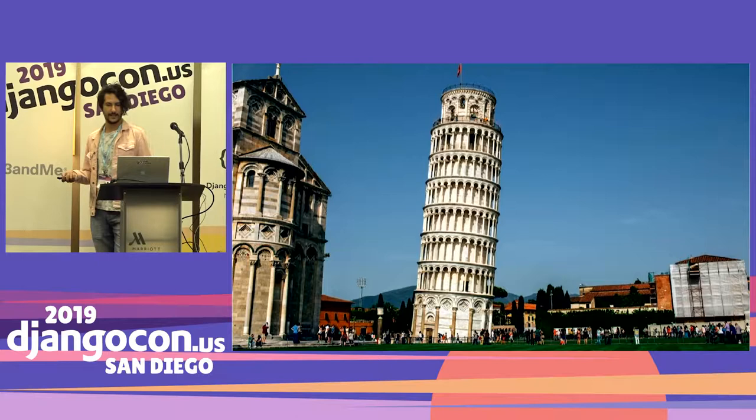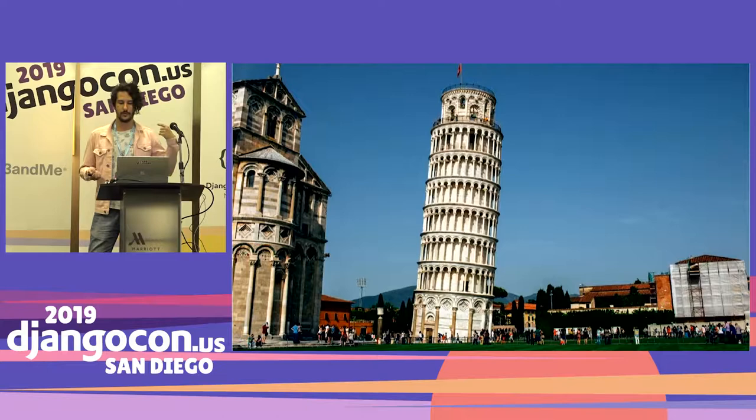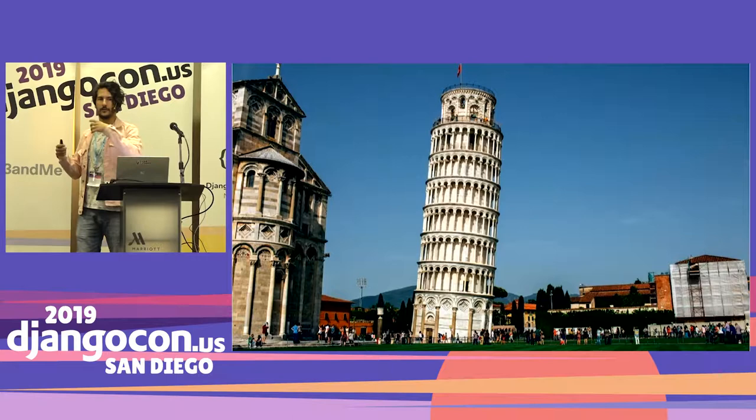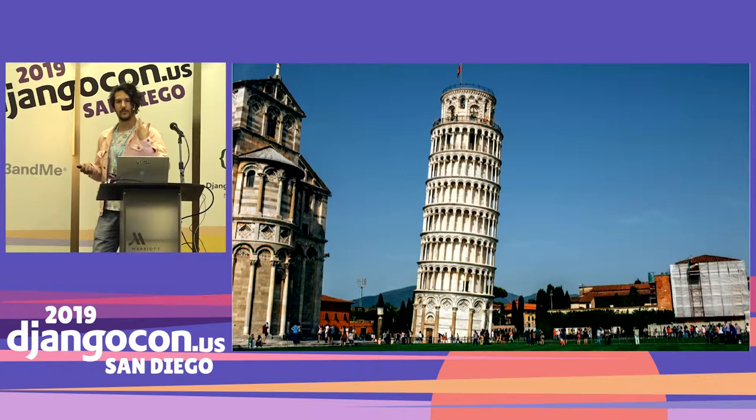Here you can see a really well-known monument. It's located in Italy, more specifically in Pisa, and it's called the Leaning Tower of Pisa. This building has a very interesting story behind it because it was built in the 12th century and due to soft ground which could not sustain the weight of the monument, it started to lean.